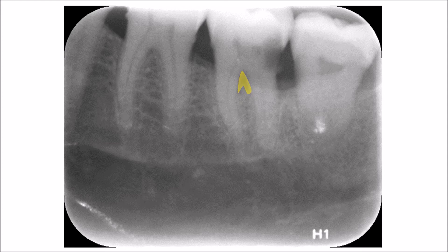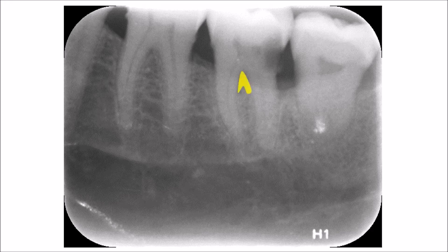Before we start, in order to judge whether or not the bifurcation area is involved, we have to trace the alveolar bone. To have bifurcation involvement, you have to have bone loss — whether vertical or horizontal — that goes to or below the level of the bifurcation area.